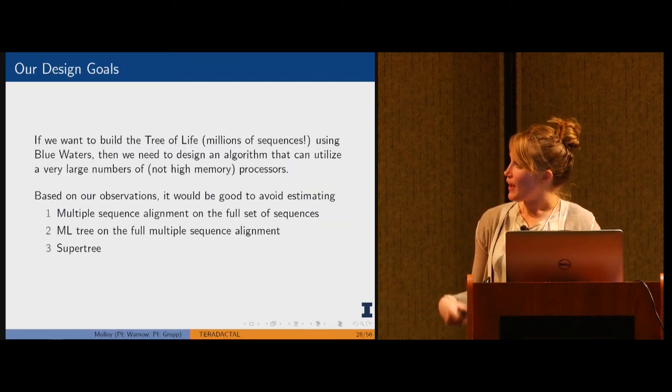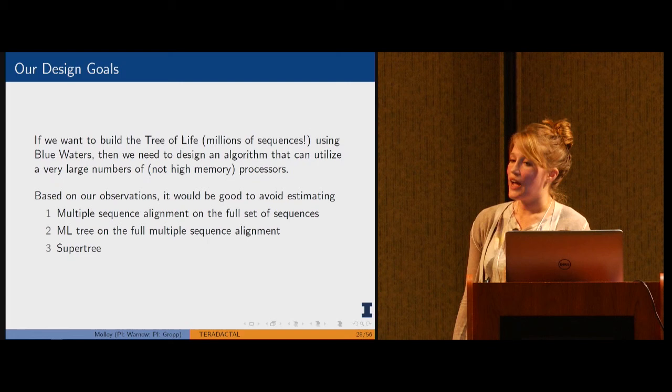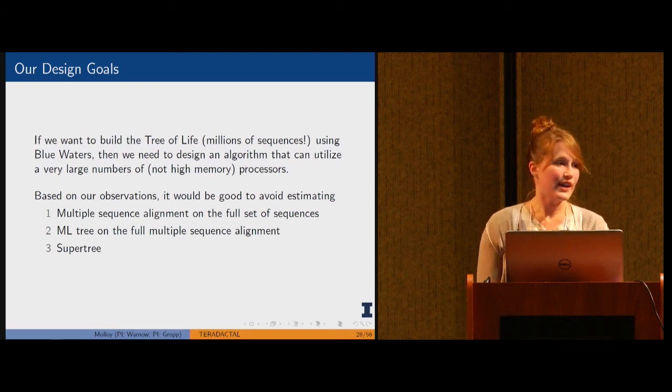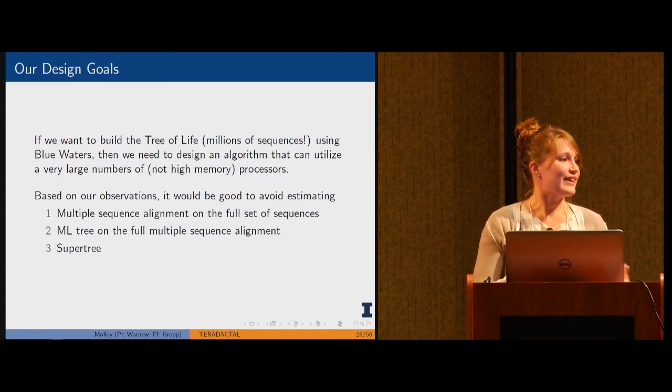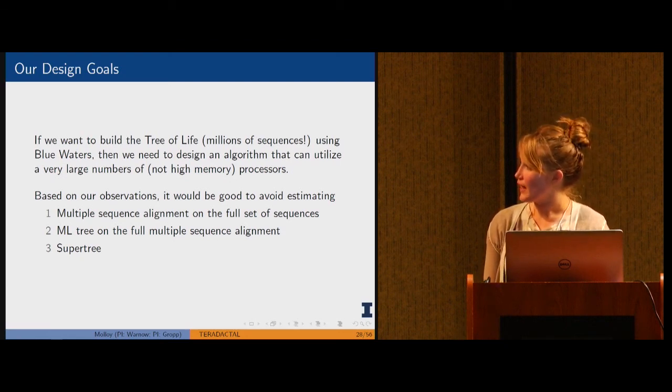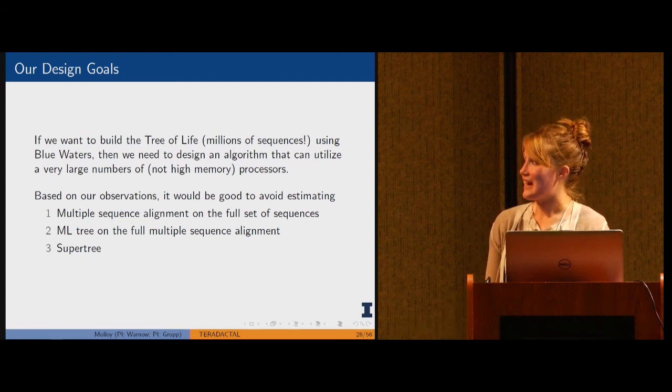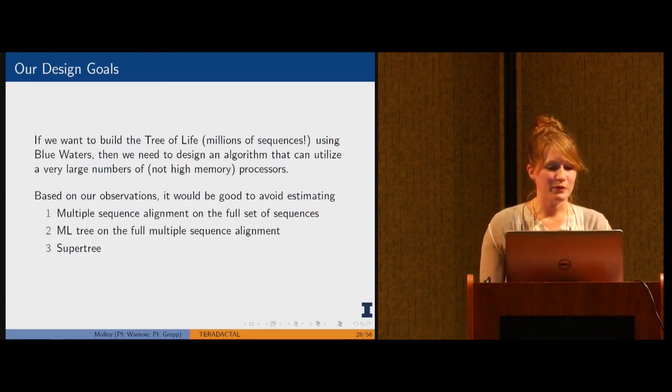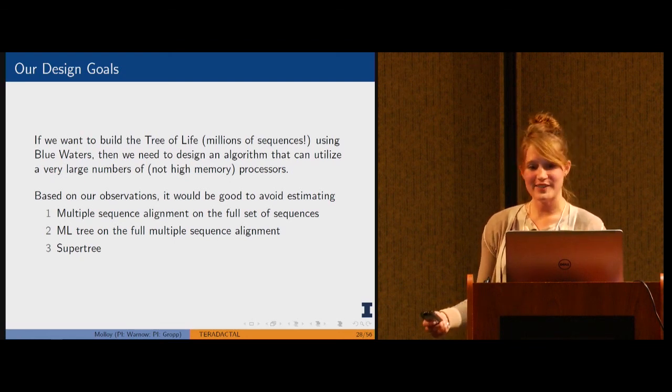From this background, we created some design goals. If we want to build the tree of life on millions of sequences using Blue Waters, we need to design an algorithm that can utilize a large number of processors dividing the data set both by n and with parallelism along the l dimensions. We wanted to avoid building a multiple sequence alignment on the full set of sequences, avoid building an ML tree on that full input, and avoid solving the supertree problem.